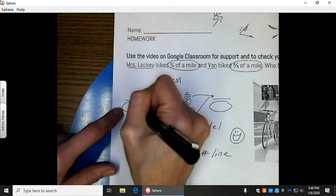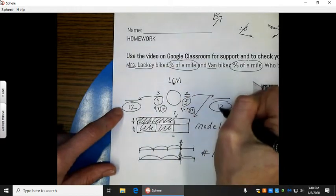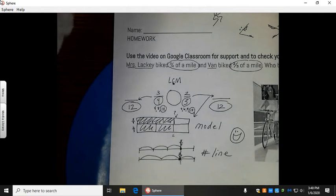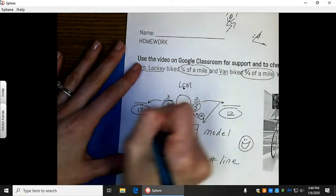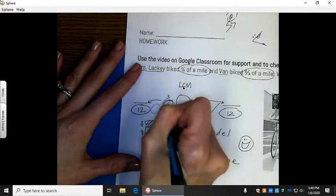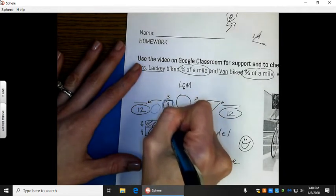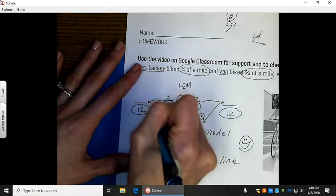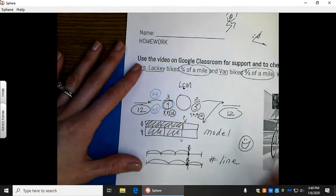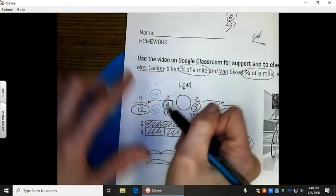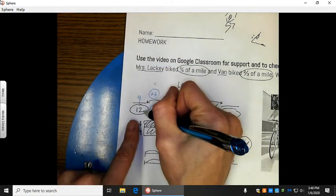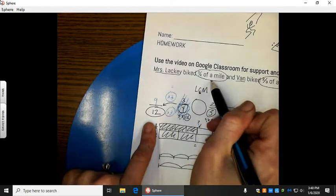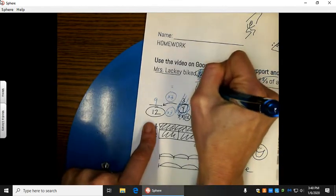So, I can make this a twelve and this a twelve. Now, to make that number, this denominator into a twelve, I have to give it a gift. What do you give a four to get to a twelve? Four times one, two, three. Give the same gift to the top to make an equivalent or equal fraction. Three times three is nine. So, instead of three-fourths, let's call that nine-twelfths. Instead of saying Mrs. Lackey biked three-fourths, Mrs. Lackey biked nine-twelfths.